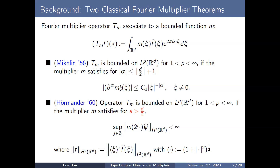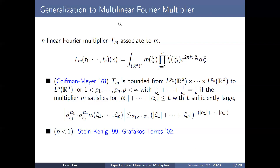These are the two classical Fourier multiplier theorems; they are linear. Now we jump into the multilinear setting. A multilinear Fourier multiplier associated with a bounded function m is defined similarly: take the Fourier transform of each function, multiply them together times m, then apply the inverse Fourier transform. This is what we call a multilinear Fourier multiplier.